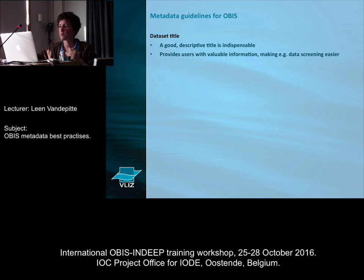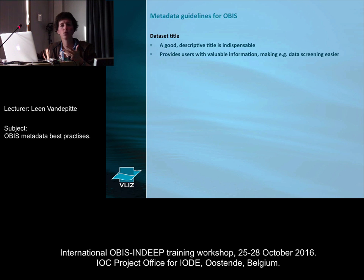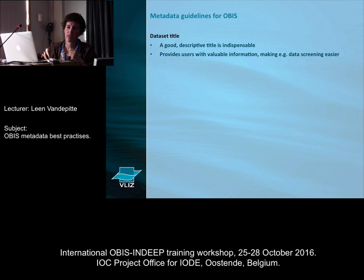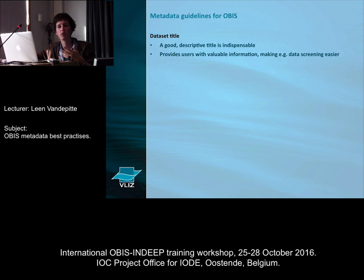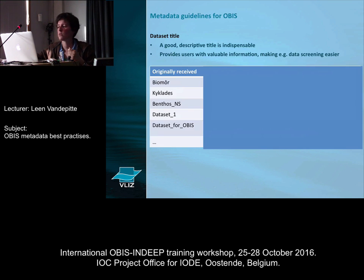What you need to start with is a title. Your dataset needs to have a title that is descriptive — when someone reads the title, they already need to have a clue about what it's about. It provides your user with very valuable information and makes screening easier. OBIS already has thousands of datasets; if all those titles were cryptic, people would have a lot of work figuring out which dataset might be useful. So the more descriptive you make your title, the easier it is for people to use it.